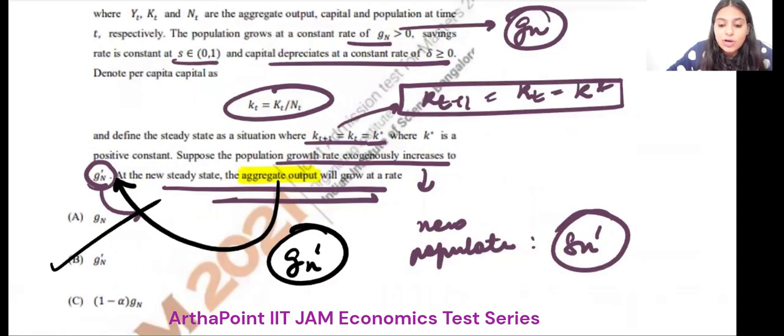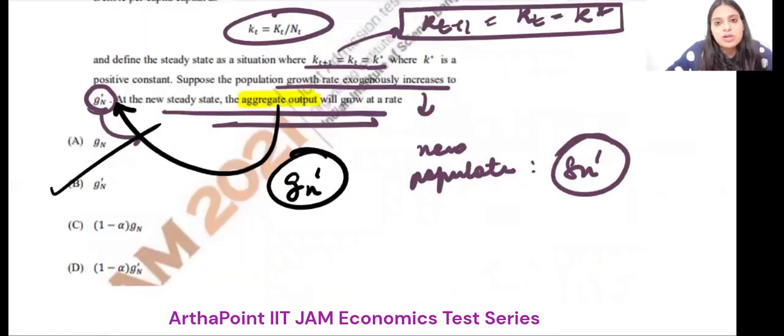You don't have to use the production function anywhere. You don't have to find the steady state. Nothing is required. Simply use the table and give the answer.